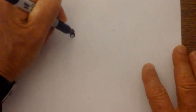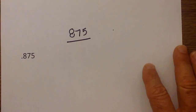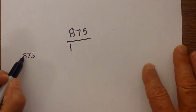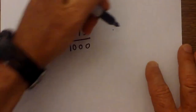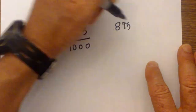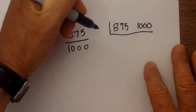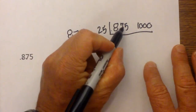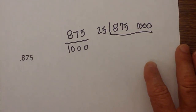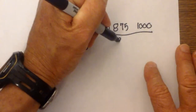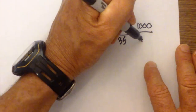Let's go ahead and write 0.875 as a fraction. I write a one. I count one, two, three — so there are three numbers to the right of the decimal. I then write 875 and 1000 under a line. I divide by 25 because I know this is divisible by 25. 25 goes into 875 thirty-five times, and 25 goes into 1000 forty times.